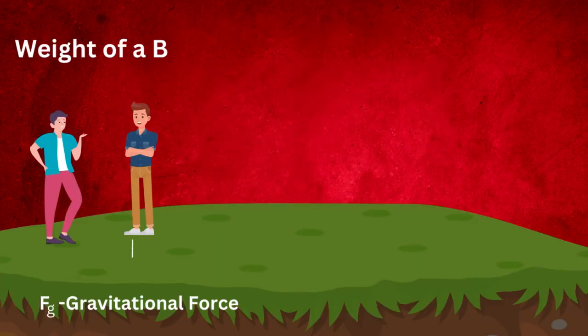The most common example of a static force is weight of a body, it is nothing but the amount of gravitational force acting on it. The gravitational constant is the same for all the objects present on the surface of the earth.